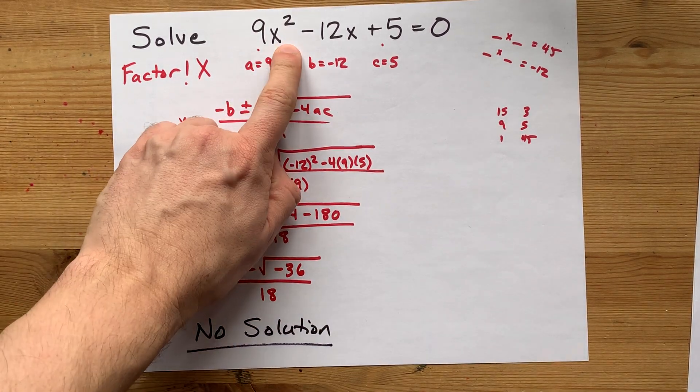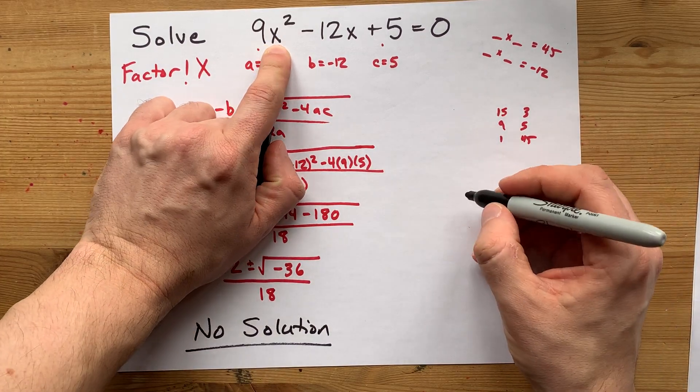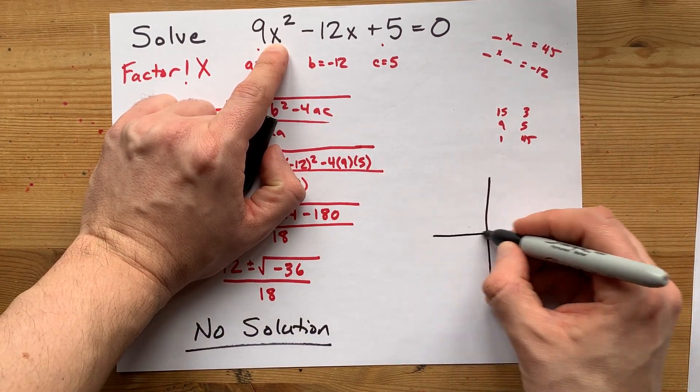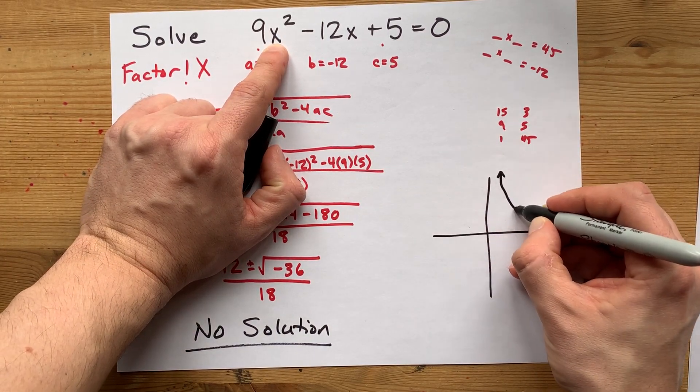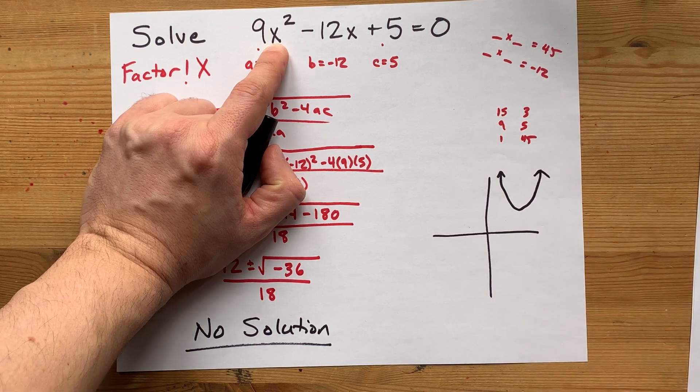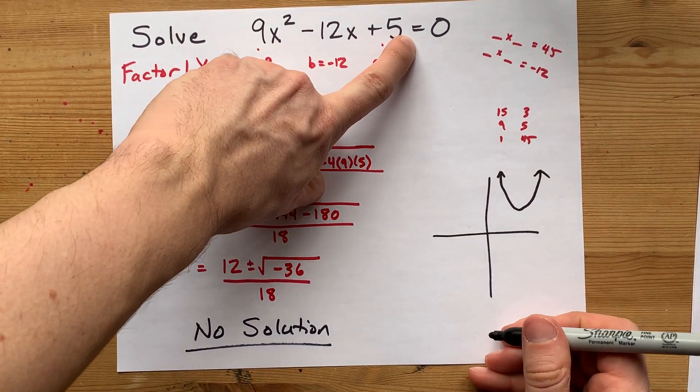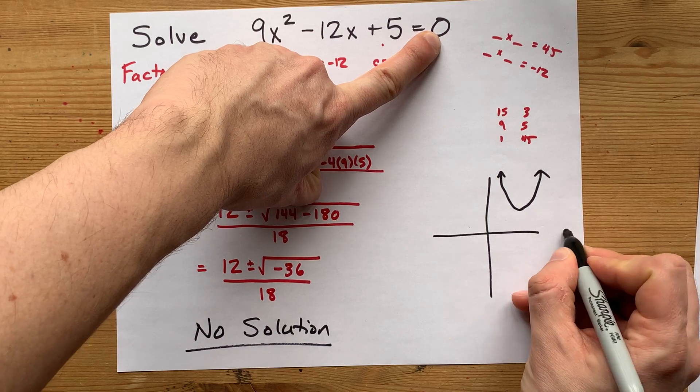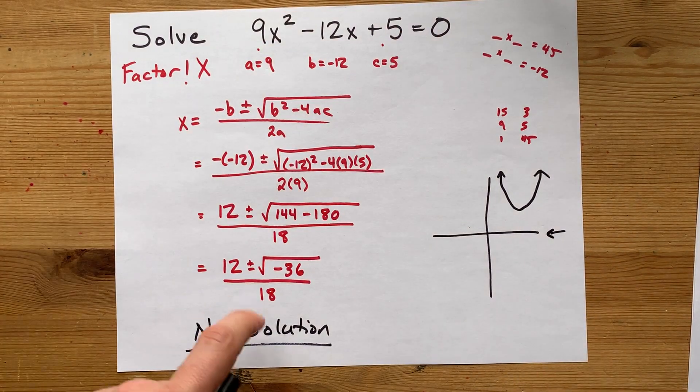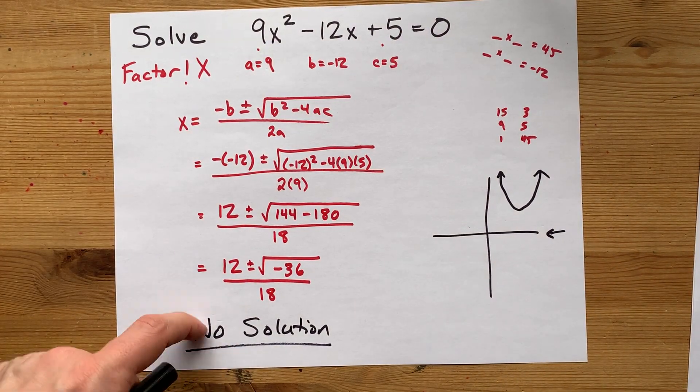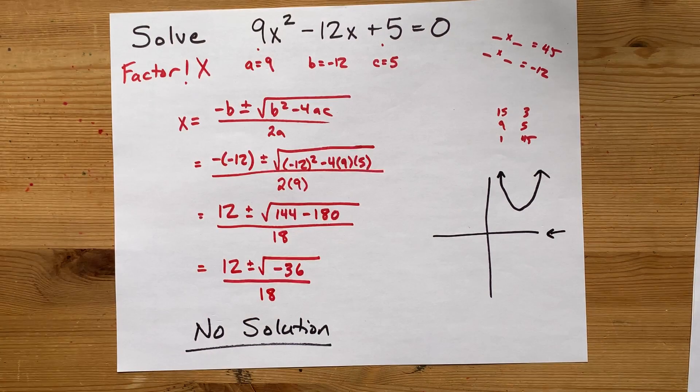What that means is that if you graph this, y = 9x² - 12x + 5, you'd end up with some parabola that looks like this. And when you say where does it equal zero, you're asking for where it hits the x-axis. And the answer is it doesn't, so there is no solution to that equation.